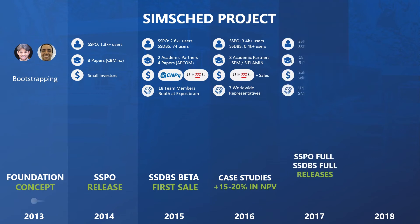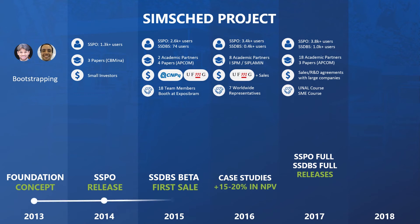In 2017, SimSched DBS achieved over a thousand users worldwide, while two new modules were released, allowing for new constraints such as blending, fleet hours, energy consumption, rock-tight proportions, and more.